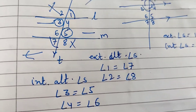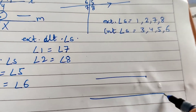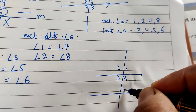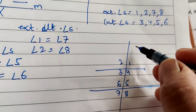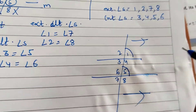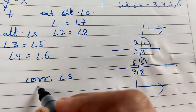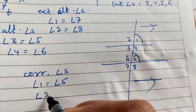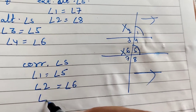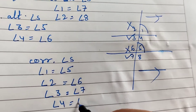It is very important to know alternate and corresponding angles. For corresponding angles, the transversal crosses two parallel lines and the same-side angles are equal: angle 1 equals angle 5, angle 2 equals angle 6, angle 3 equals angle 7, and angle 4 equals angle 8.